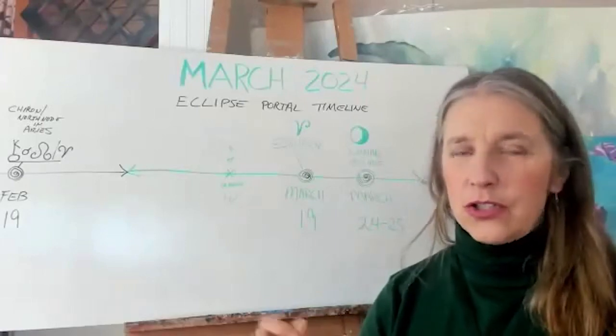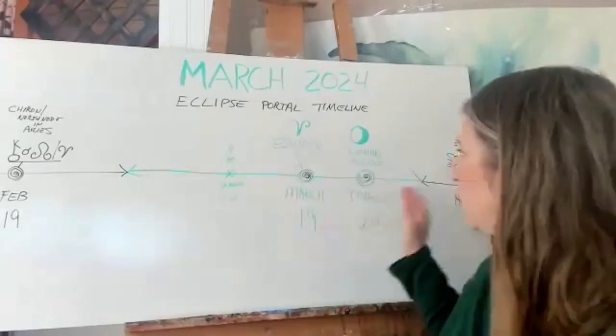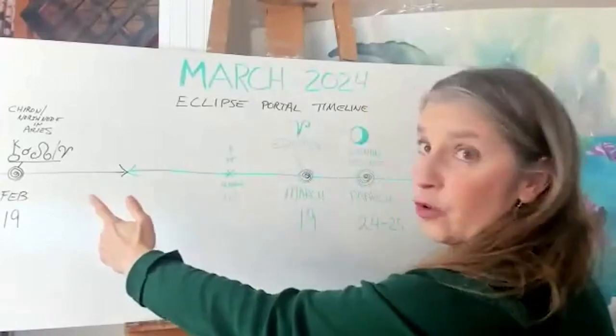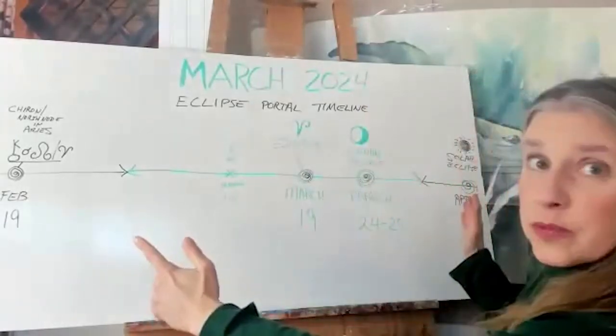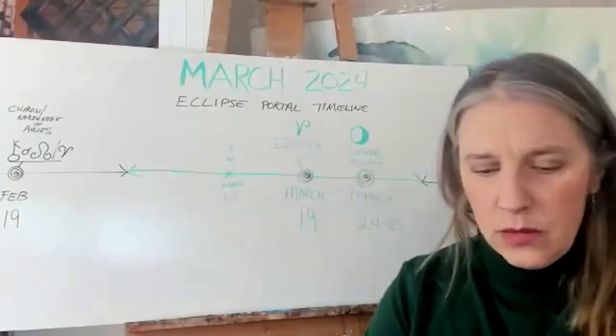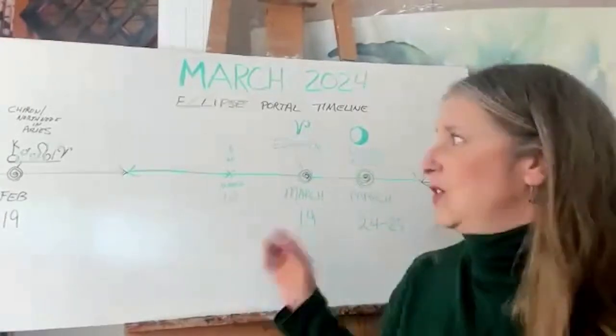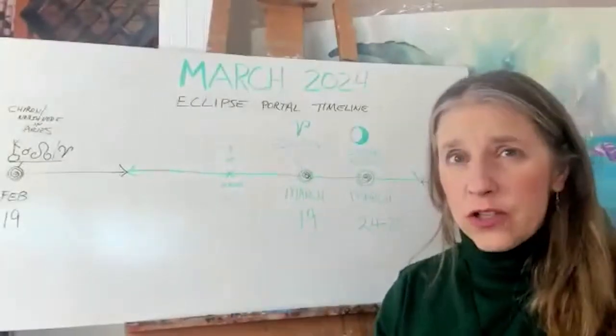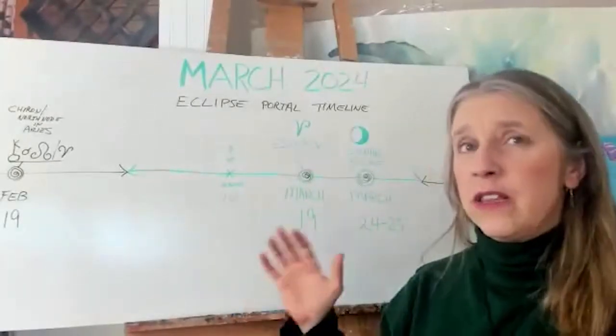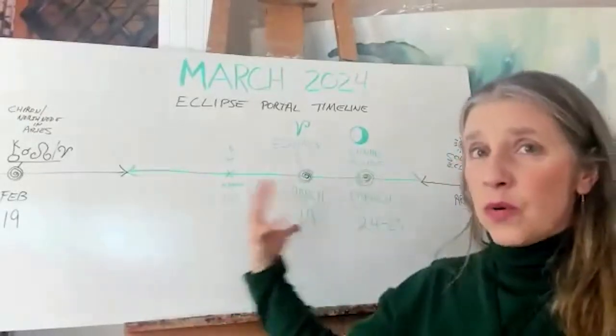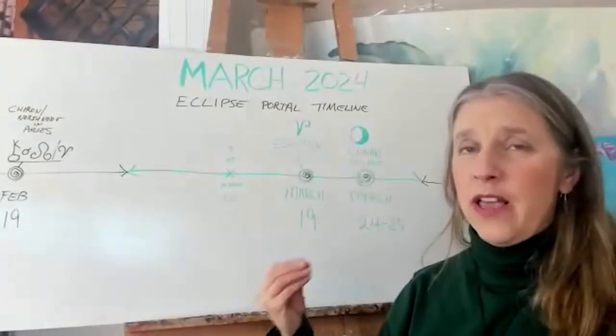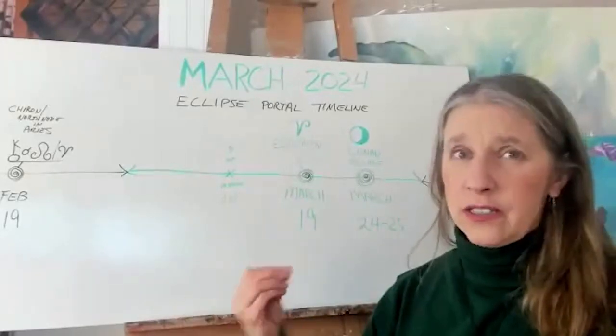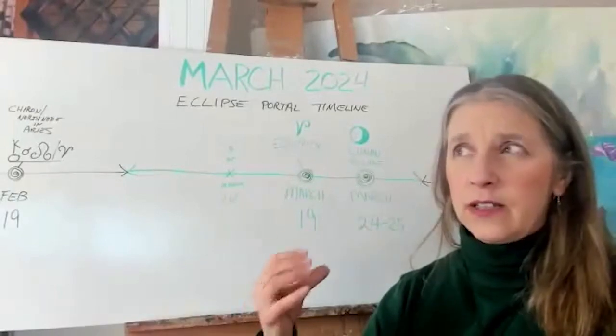March is here sandwiched between these two super powerful points, this conjunction of Chiron North Node in Aries and the solar eclipse also in Aries. What I'm seeing is it's like this crucible where all these elements are simmering together and they're forging something immensely powerful. This period of time has the potential to really shift our entire generation. It feels like one of these pivotal points.